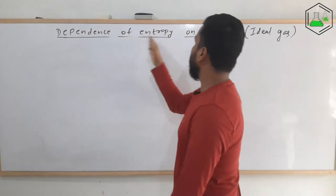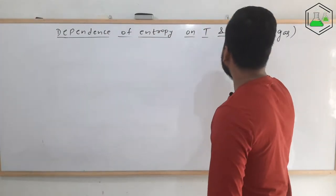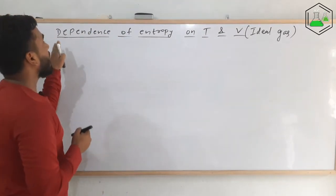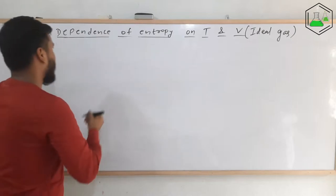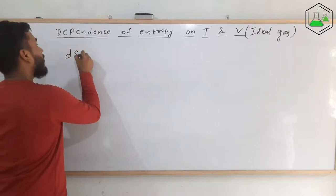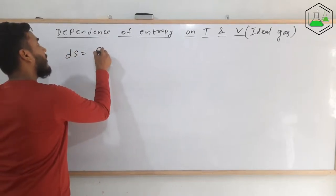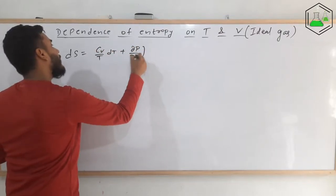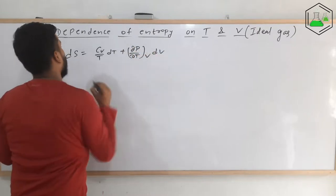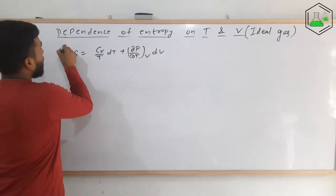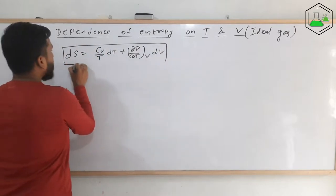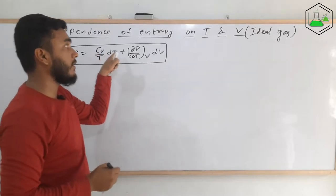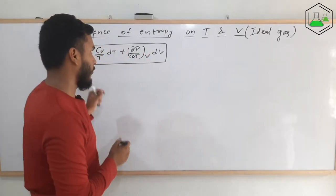To see the dependence of entropy on temperature and volume for an ideal gas, let us write the formula first. That is, ds equals (Cv/T)dT plus (∂p/∂T)_V dV. This mathematical expression gives us the information about the dependence of entropy on temperature and volume, which we have already derived.